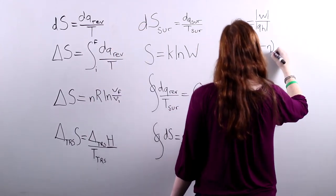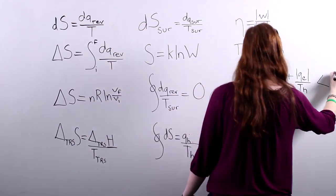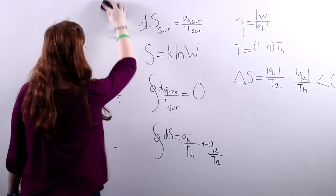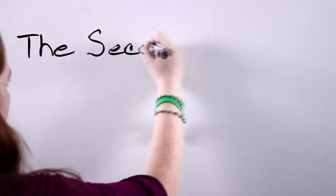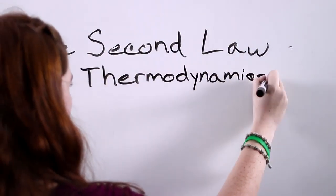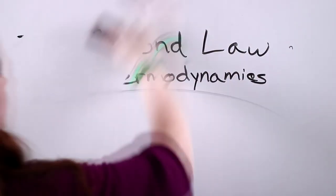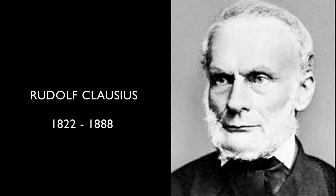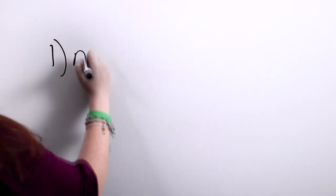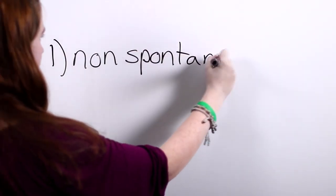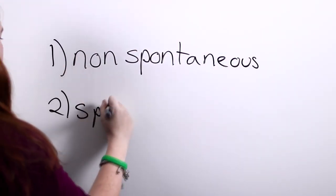This all sounds really complicated, but actually it's quite simple. The second law of thermodynamics was first formulated by Dr. Rudolf Clausius, and it summarizes two classes of process: non-spontaneous and spontaneous.